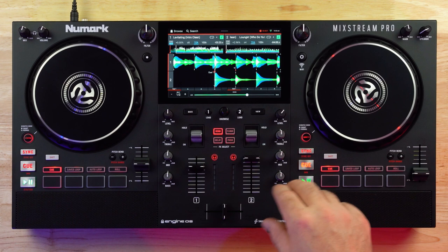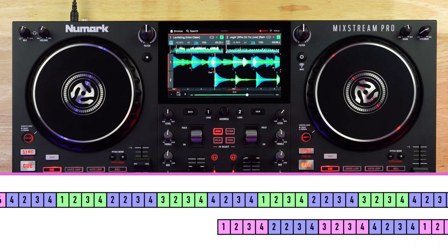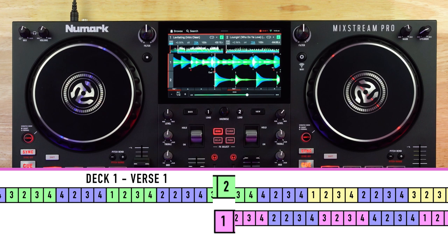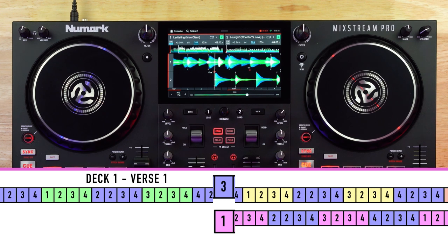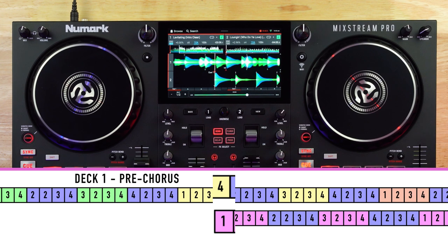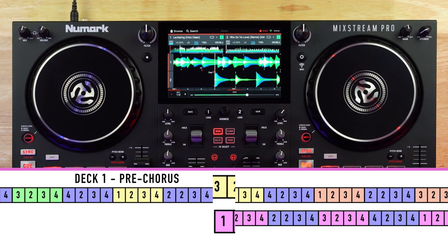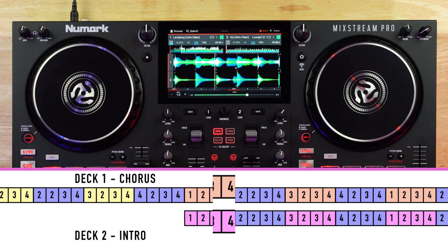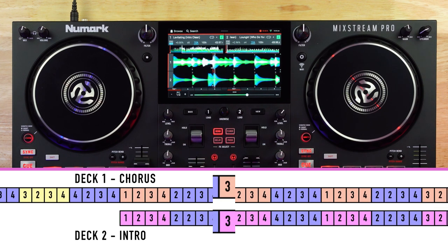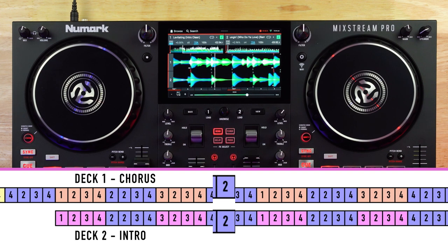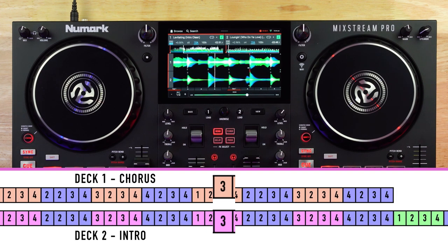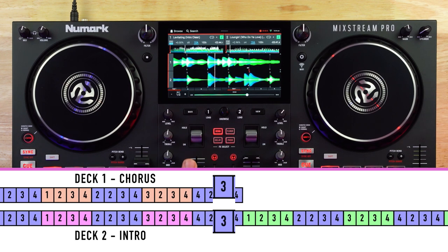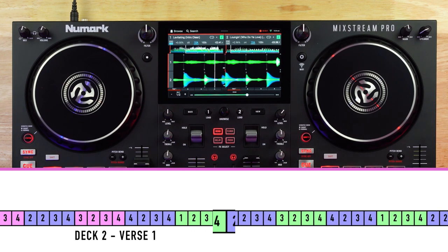We're going to keep the volumes up on both decks as we mix. The pre-chorus is going to start soon — here we go, pre-chorus starting, 4 bars. Counting through bars 1, 2, 3, 4 — now mixing in. Fading over across 4 more bars: 1, 2, 3, 4 — and verse number 1 starts on the next track.